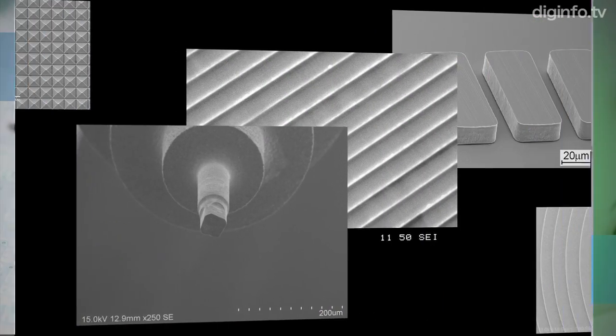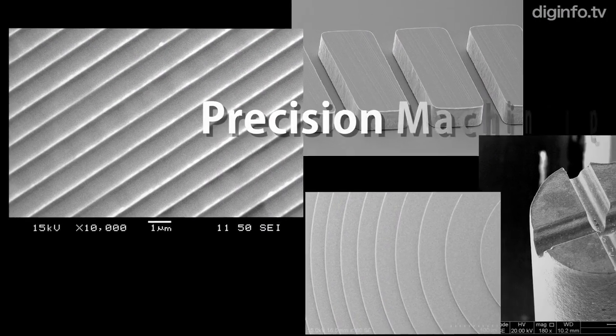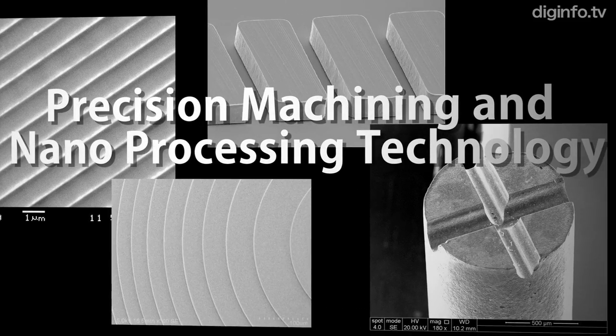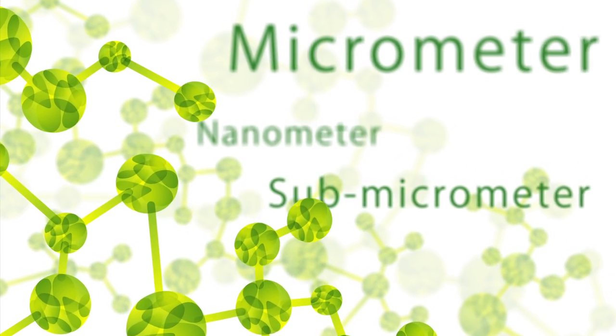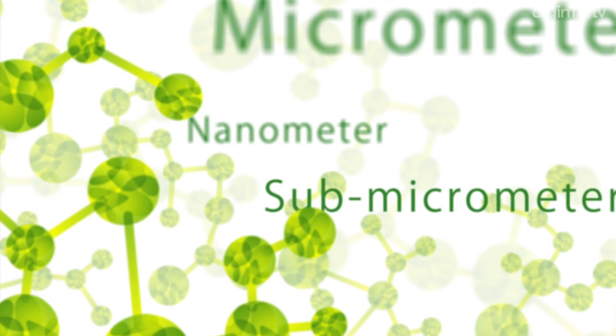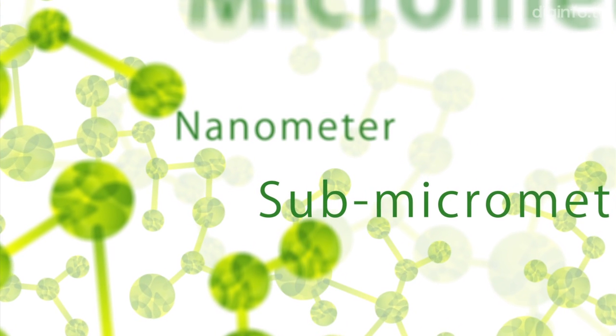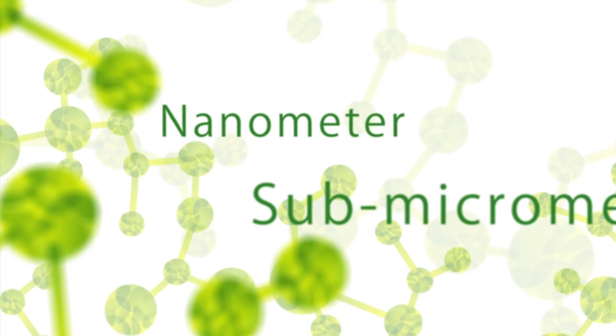all kinds of optical, mechanical and electronic products are manufactured using high-precision manufacturing technologies. The precision of manufacturing technology has advanced from the micrometer to the submicrometer level, and recently to the nanometer scale.